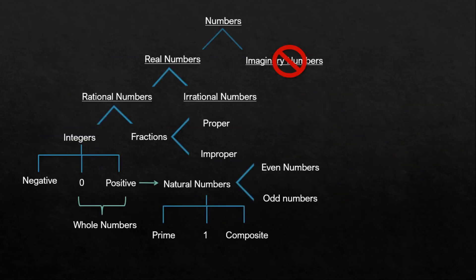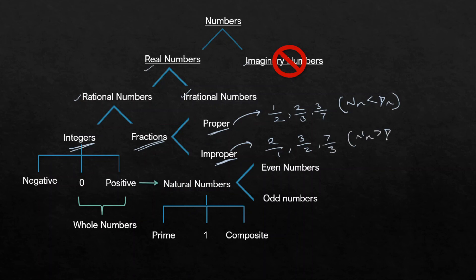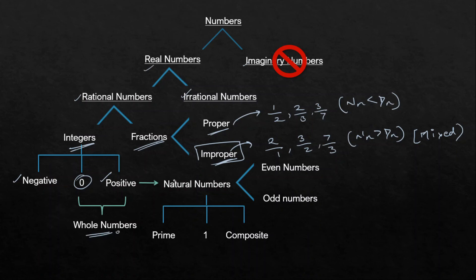Now let's move to the classification of numbers. We have real and imaginary numbers. Real numbers split into rational and irrational. Rational numbers divide into integers and fractions. Fractions are either proper — where numerator is less than denominator, like 1/2, 2/3 — or improper — where numerator is greater than denominator, like 2/1, 7/3. Only improper fractions can be written as mixed fractions. Integers include negative integers, zero (neither negative nor positive), and positive integers.